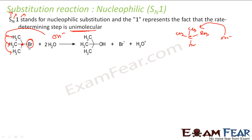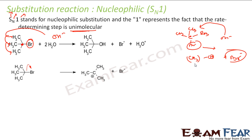The reaction will happen only when this bromine leaves on its own. The rate-determining step is the one where bromine goes on its own and forms Br minus — this is the rate-determining step. This is a very slow process. Bromine is privileged and can't be attacked by OH minus, so when it's bored and wants to leave, it leaves, forming Br minus and a carbocation.